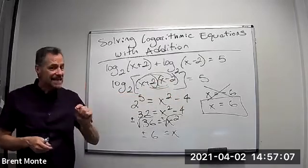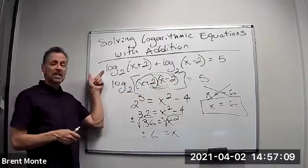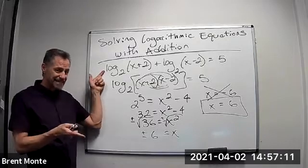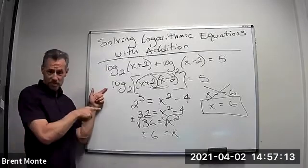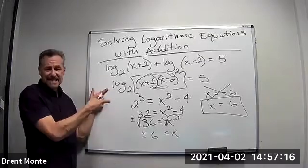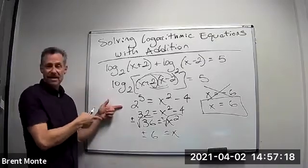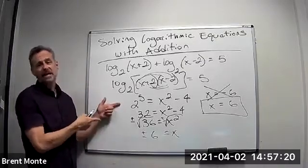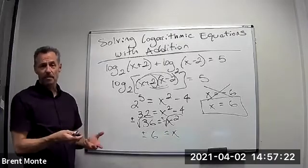So remember the key. Change from two separate logarithms with addition to a single logarithm with multiplication. We need to change it to a single logarithm because now I can change from log form to exponential form and then solve my problem.